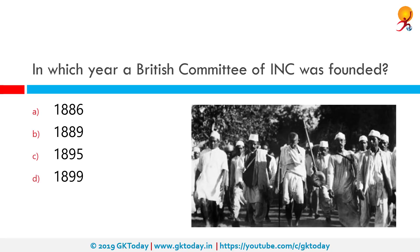In which year was the British Committee of Indian National Congress founded? The correct answer is 1889. The British Committee of the Indian National Congress was established in Britain by the Indian National Congress in 1889. Its purpose was to raise awareness of Indian issues to the public in Britain, to whom the government of India was responsible back then.